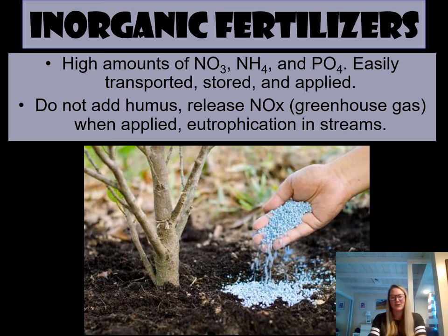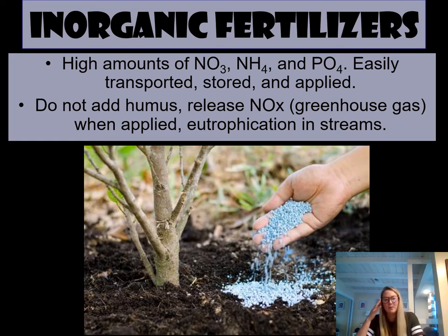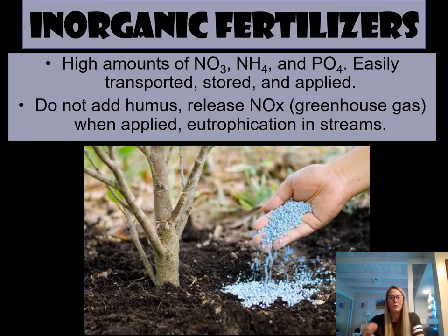There are two main categories of fertilizers: inorganic and organic. Inorganic fertilizers are composed of three main things: nitrate, ammonium, and phosphate. They are easy to transport, store, and apply. However, they don't add any organic material or humus to the soil, they are a greenhouse gas source — nitrous oxide is released upon application, contributing to climate change — and runoff of nitrates and phosphates into streams causes eutrophication, leading to excessive algae growth and depletion of oxygen in the water.